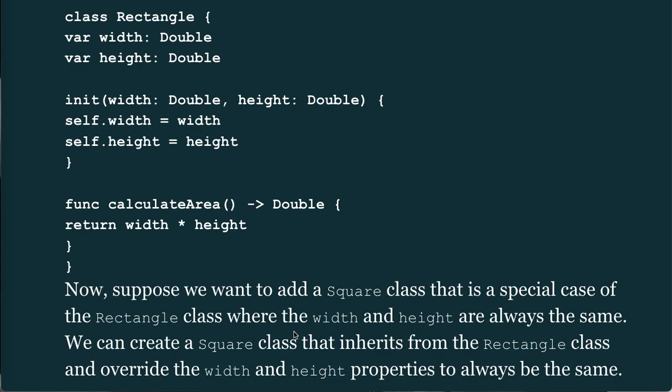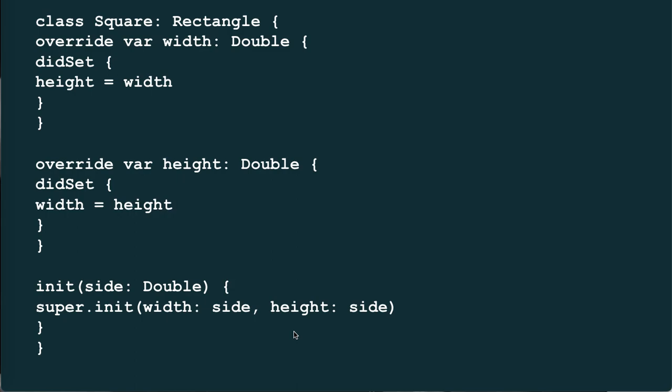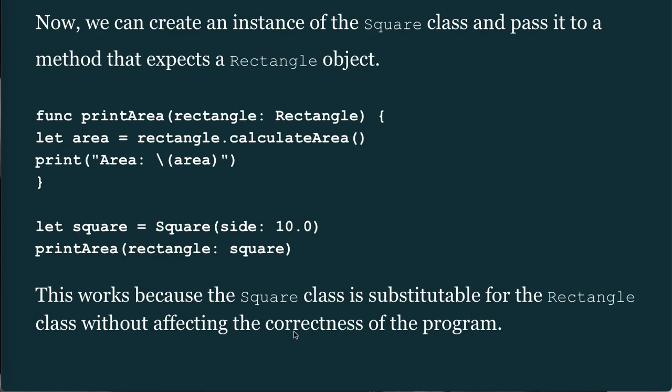Suppose we want to add a Square class — a special case of Rectangle where width and height are always equal. We can create a Square class inheriting from Rectangle and override the width and height properties: class Square: Rectangle { override var width: Double { didSet { height = width } }; override var height: Double { didSet { width = height } }; init(side: Double) { super.init(width: side, height: side) } }.